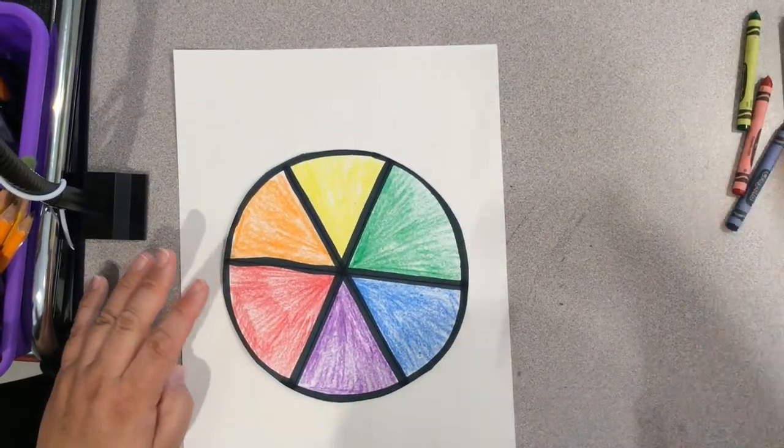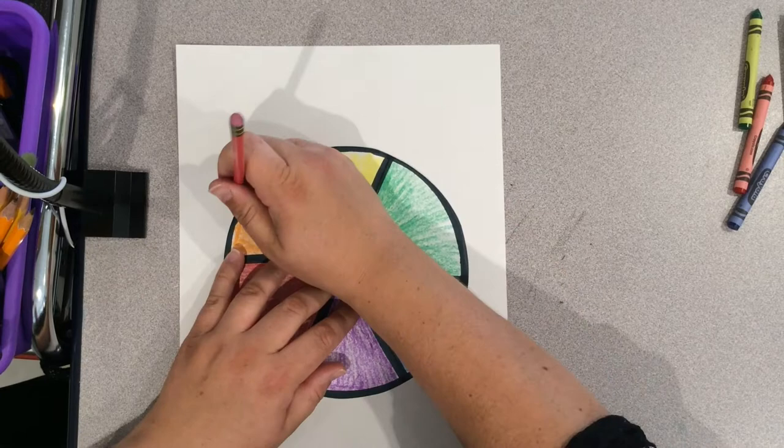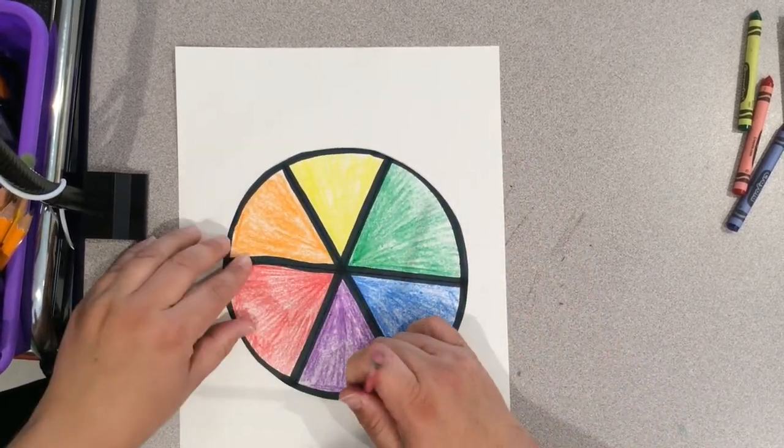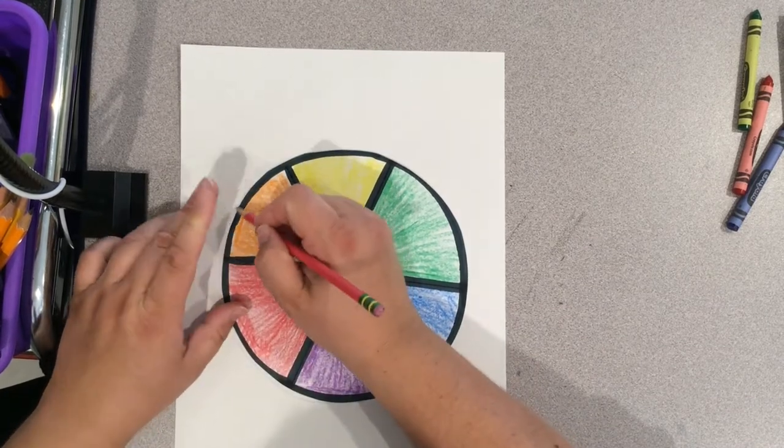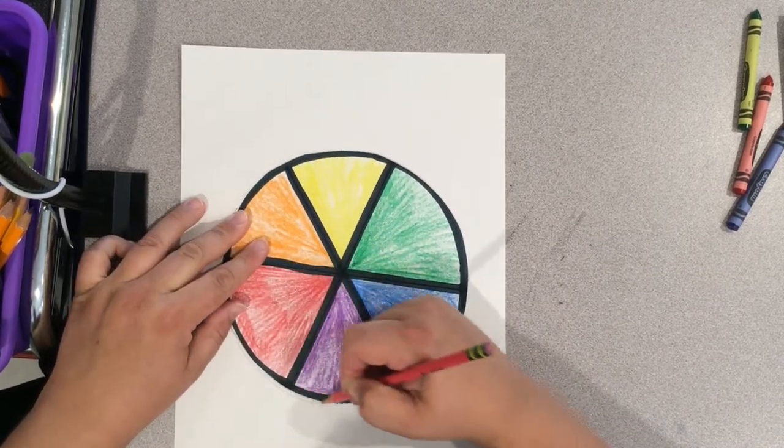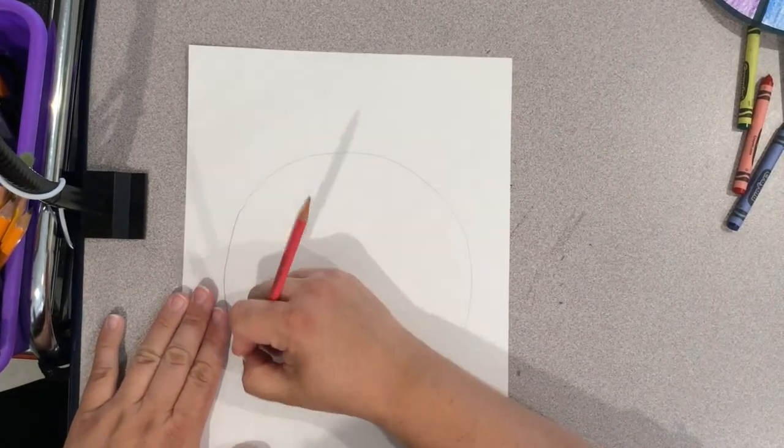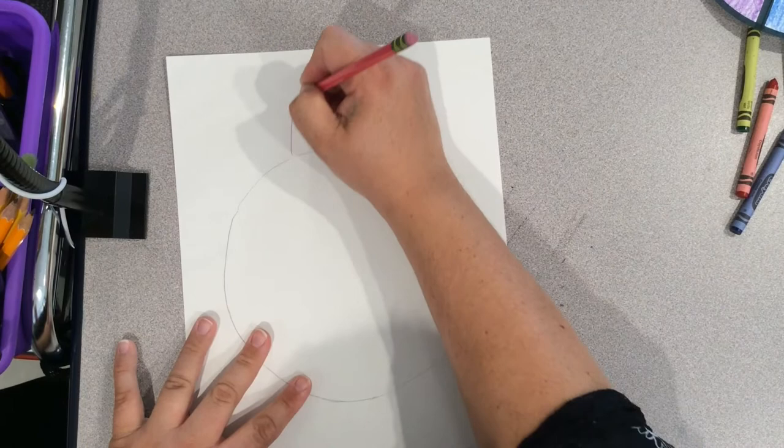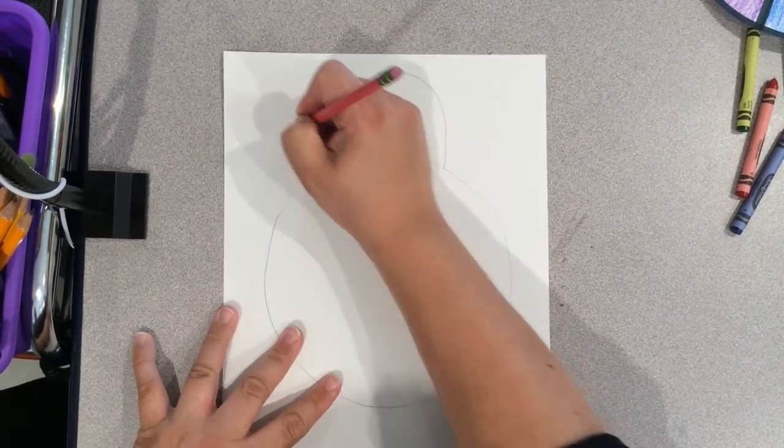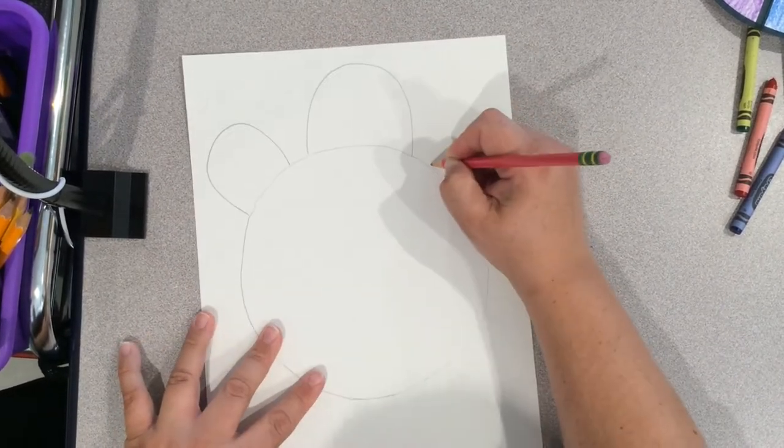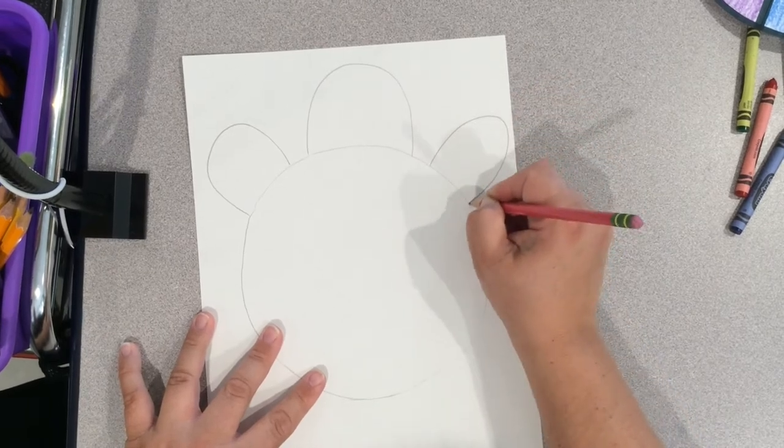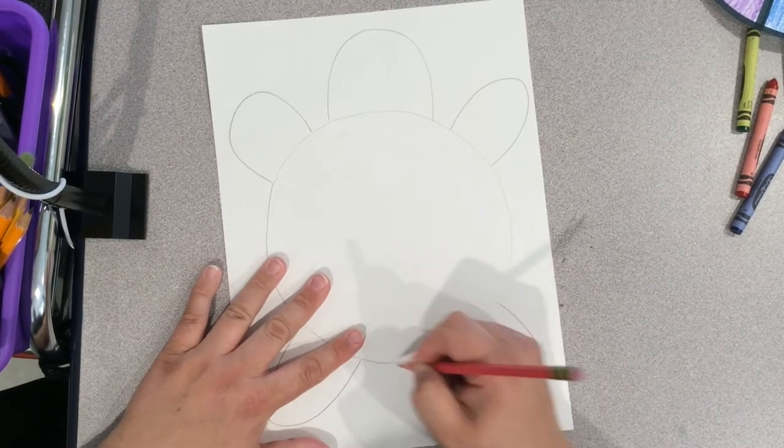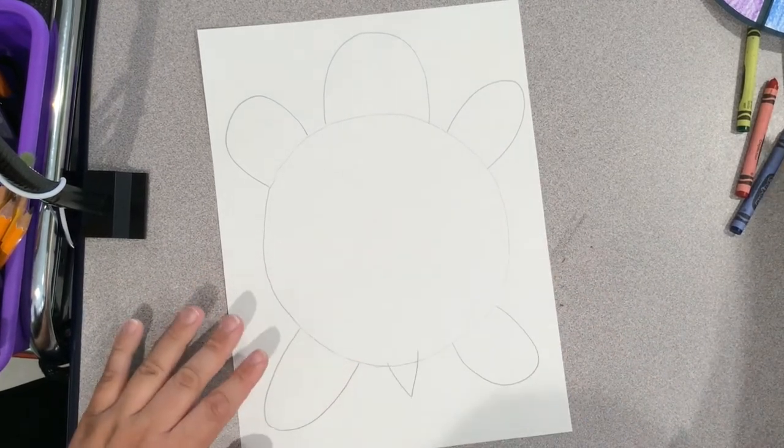If you're doing the turtle, put your color wheel a little more centered on your paper, pretty similarly to how it was when we traced and colored. Go ahead and get an outline for your circle so we know where to add our turtle details. Add a head, some front arms or flippers, some back legs. These are really simple shapes and a little triangle for a tail.